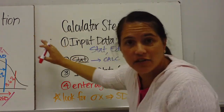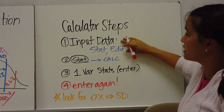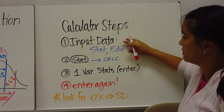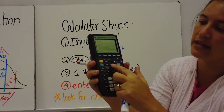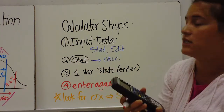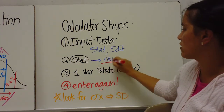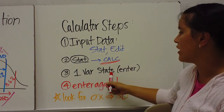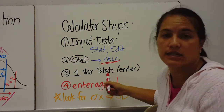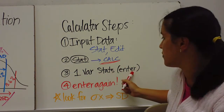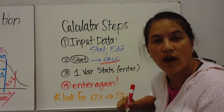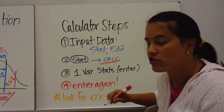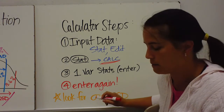Here are the calculator steps. First, input your data. Then press STAT, arrow over to CALC, and select one-variable statistics. Press Enter twice. Your standard deviation will appear — look for the lowercase sigma symbol.